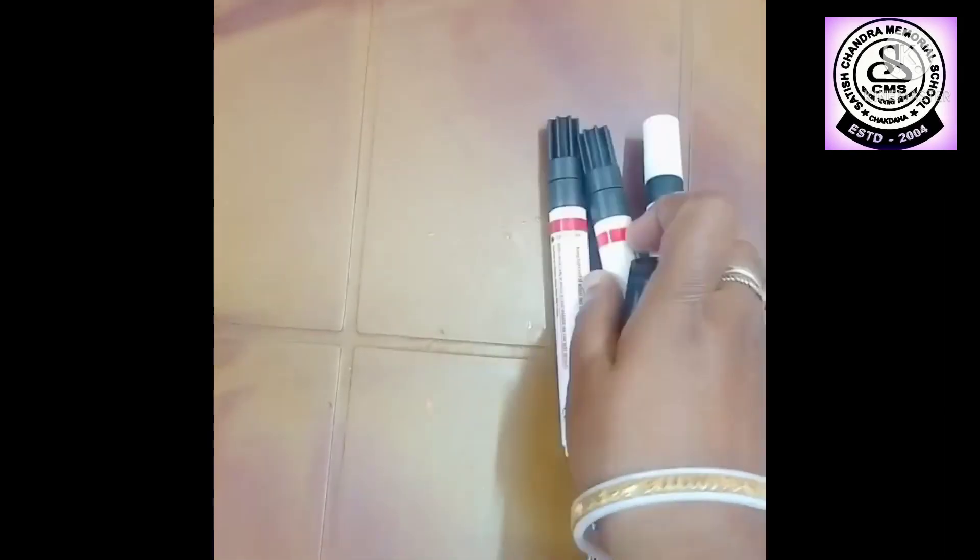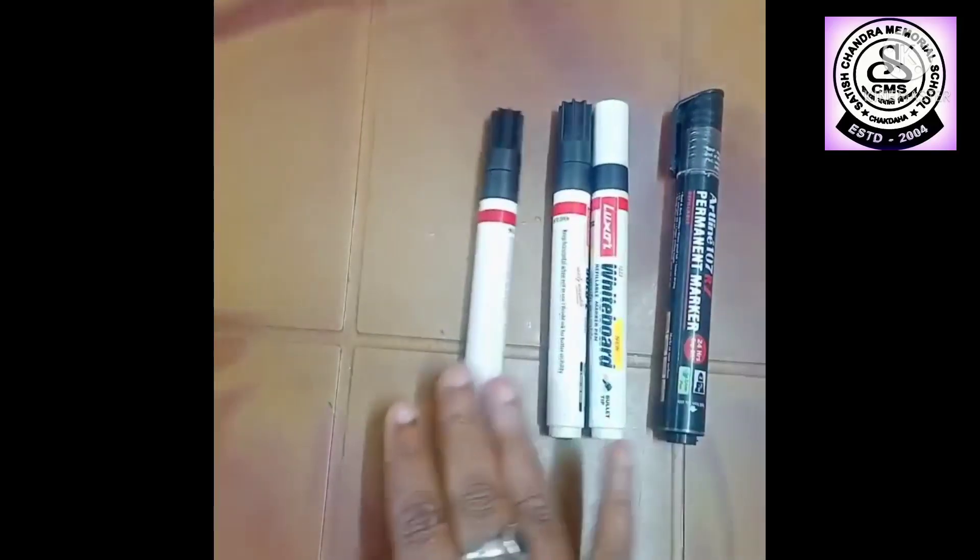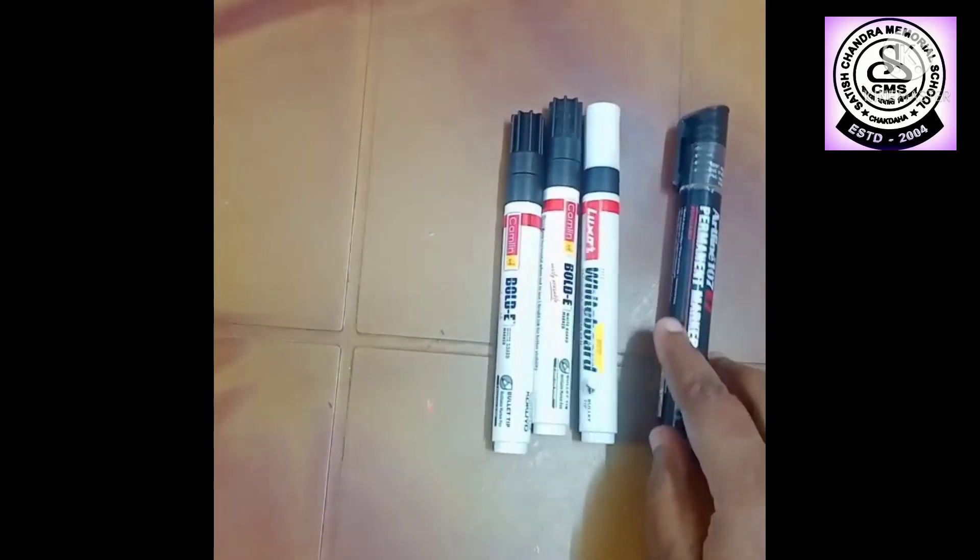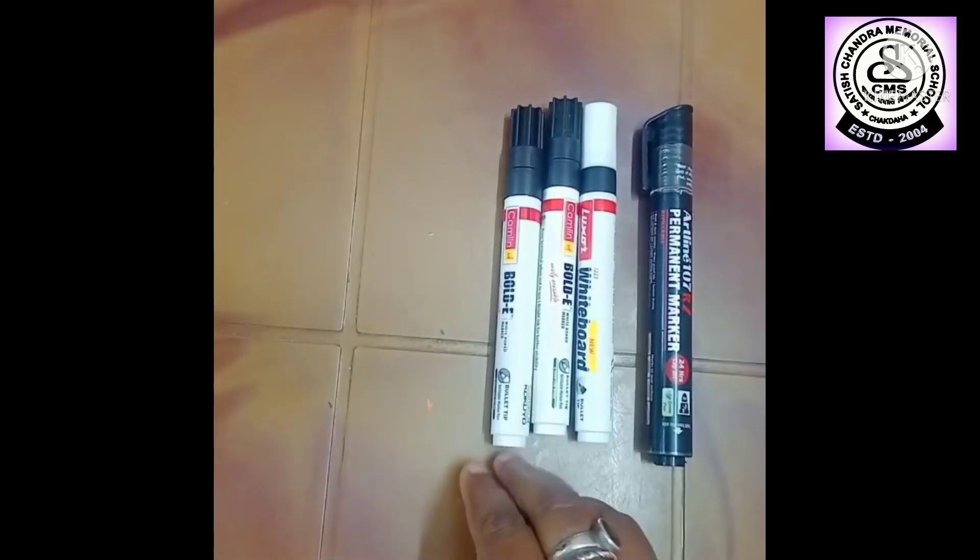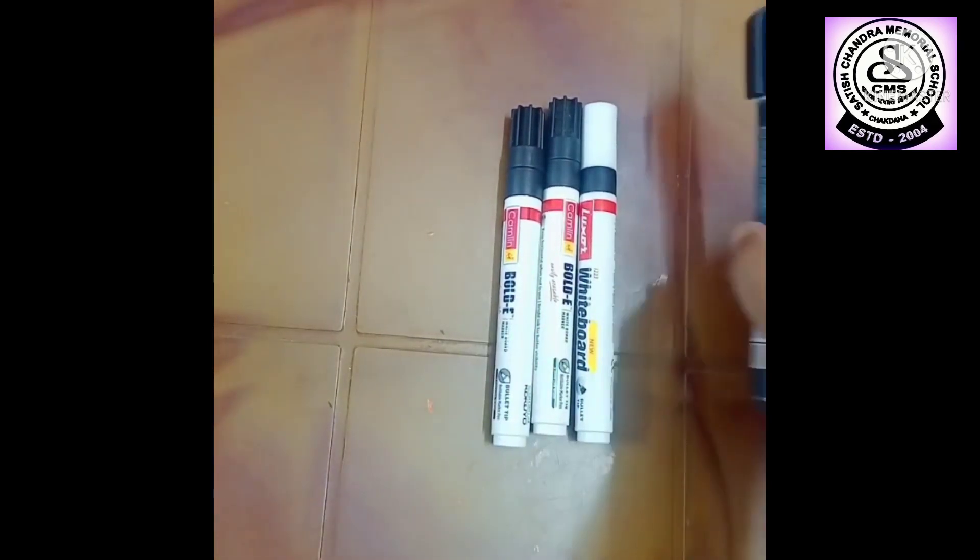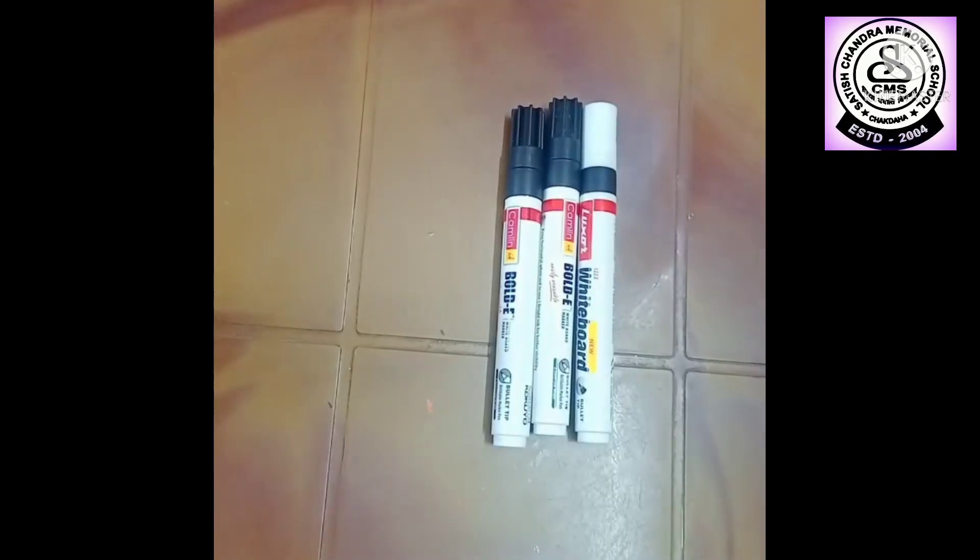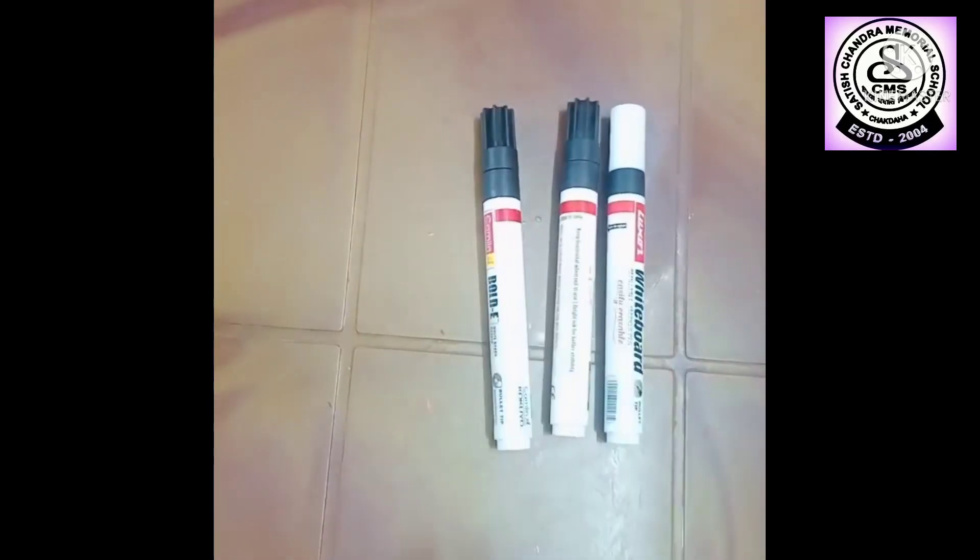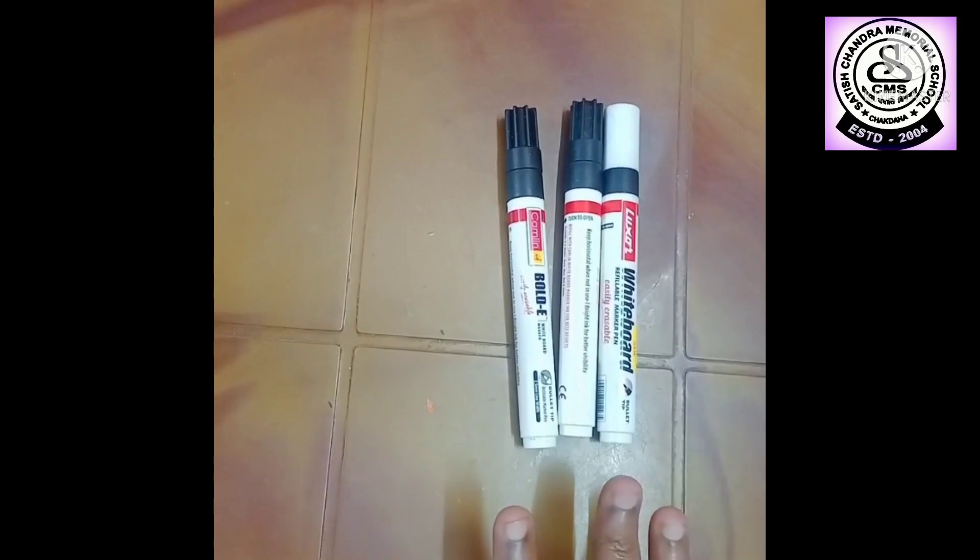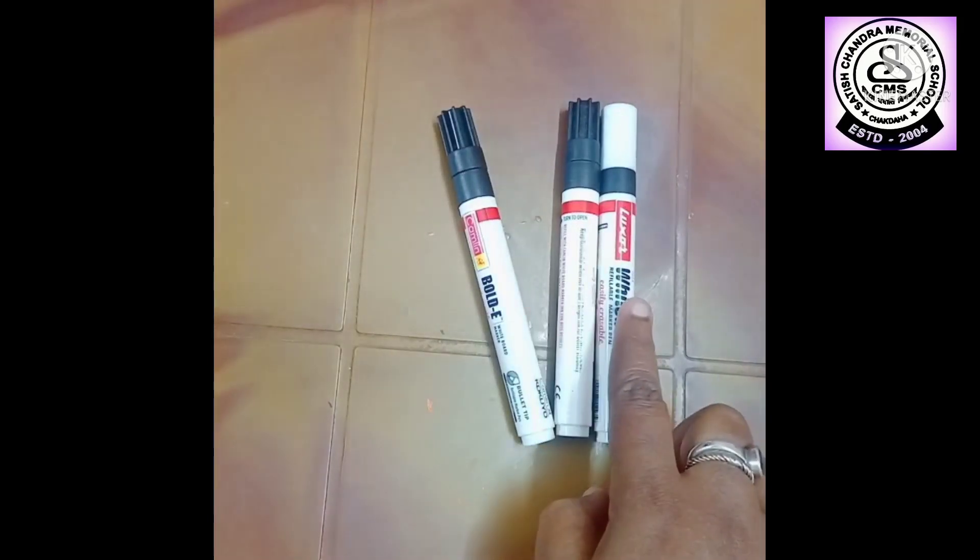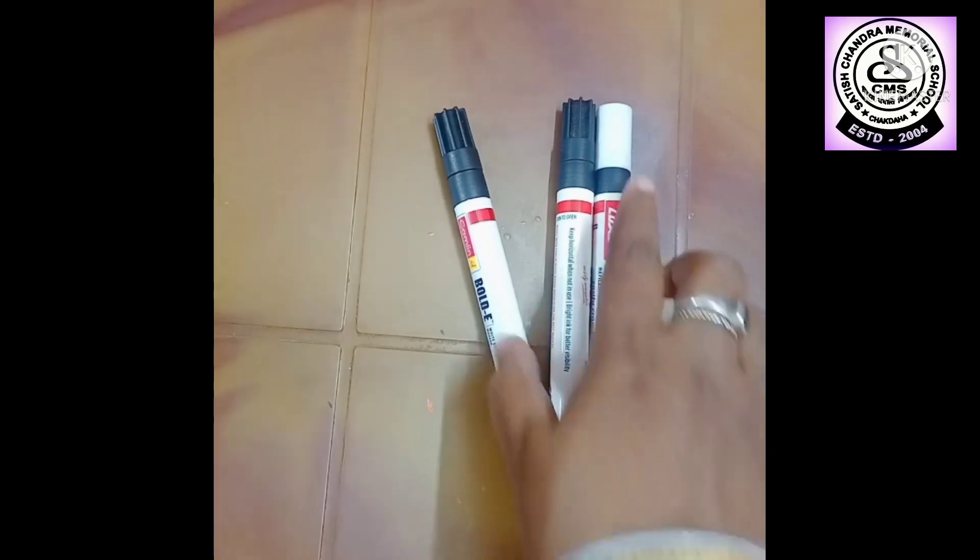Here so many markers are here. How many? Let's count. 1, 2, 3, 4. If I remove from the 4 markers, if I remove 1 marker, that is black color, yes, how many markers are left? 1, 2, 3. So children.